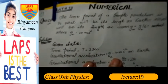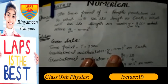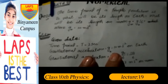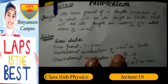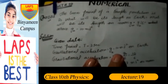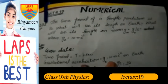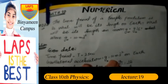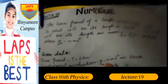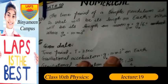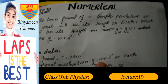Assalamu alaikum, my name is Naim Abbas, I am your physics teacher. Today I deliver a lecture on numerical 10.1, number 10: the time period of a simple pendulum is two seconds. What will be its length on Earth?